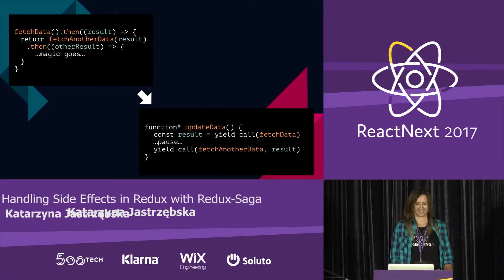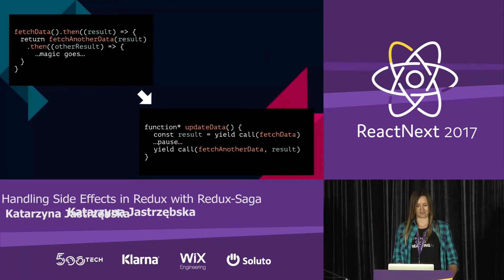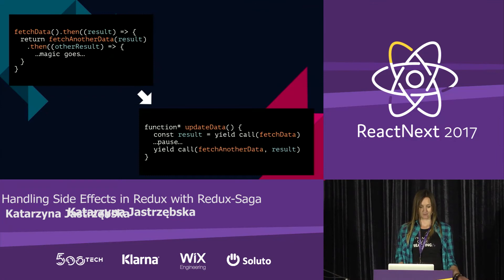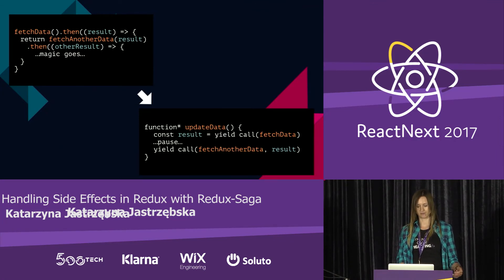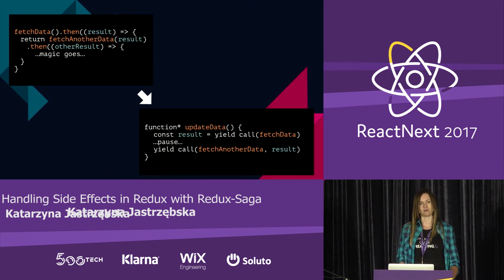It's pretty simple, right? There is just a `yield` for fetching data, and then another `yield` with a `call` effect to fetch another piece of data.